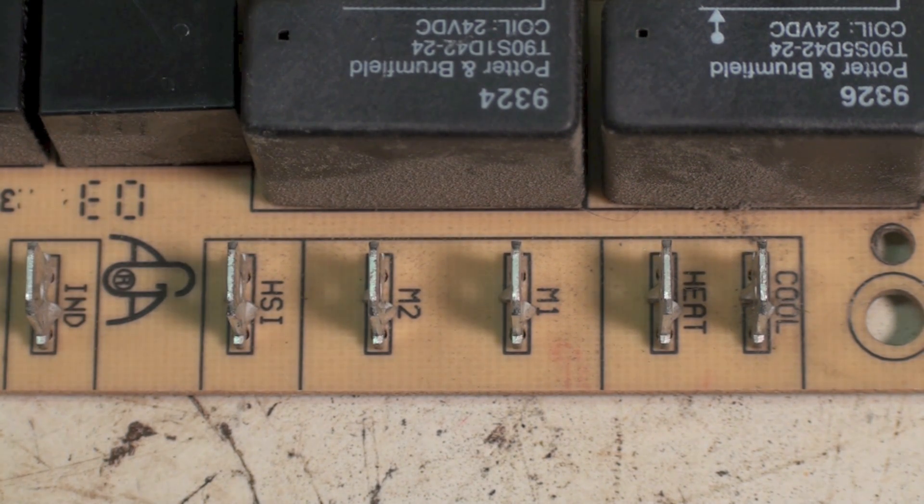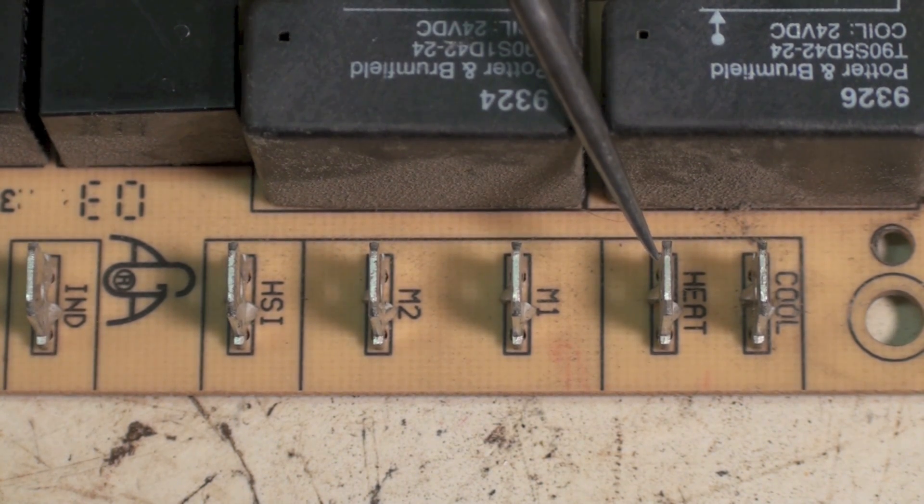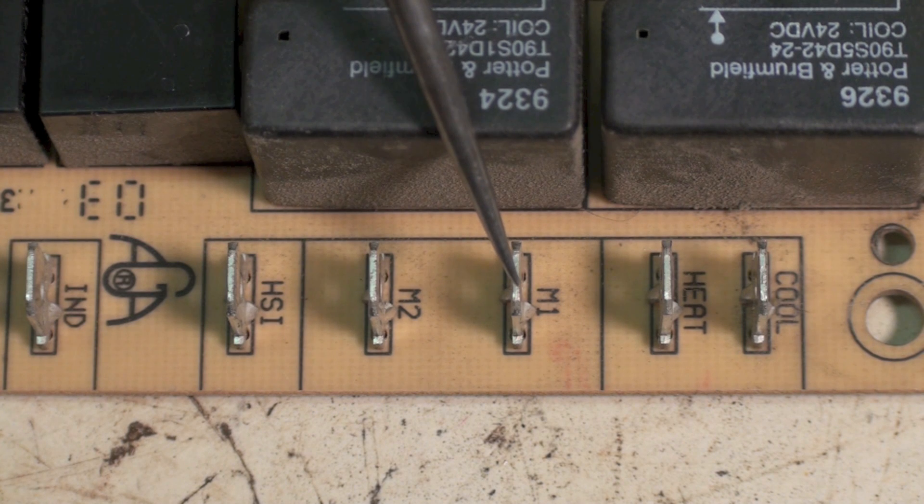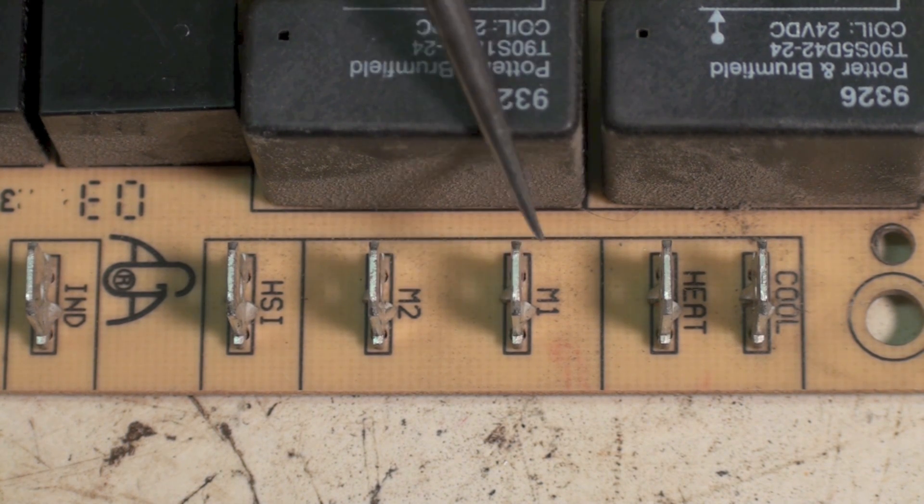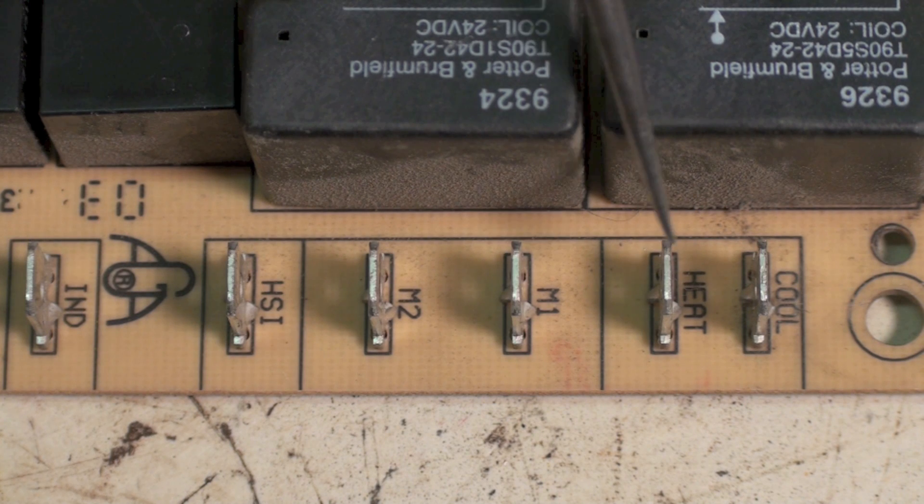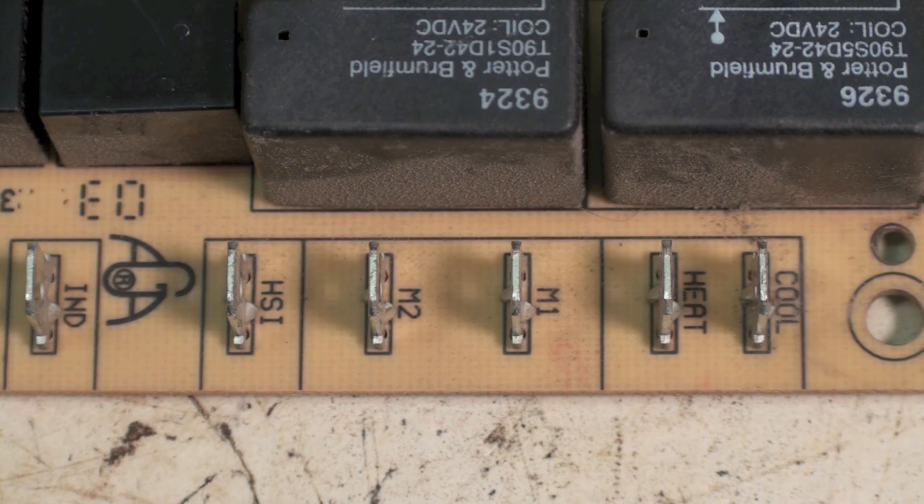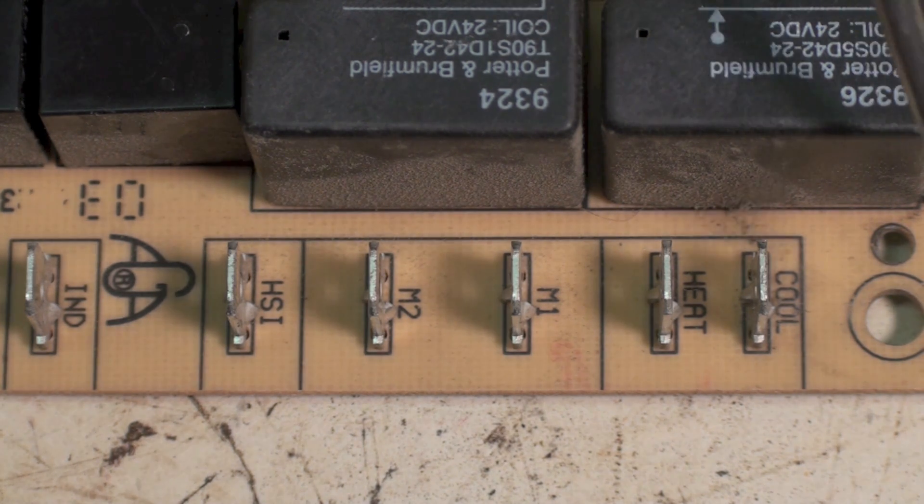If I had, say, red on heat and I had blue on M1, then I could take the blue from M1 and put it where the red is, and then put the red on M1. You can do that - that's okay. You haven't messed with your common, you haven't put two speeds together or anything like that. The heat and cool speeds are separated by a relay so it'll work fine.